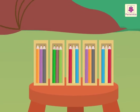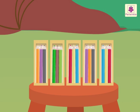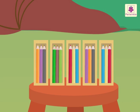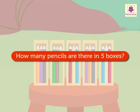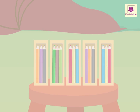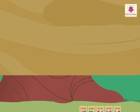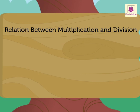There are 5 boxes and each box has 3 pencils. In all, how many pencils are there in 5 boxes? To get the product, we multiply the numbers 5 and 3. 5 into 3 is equal to 15.